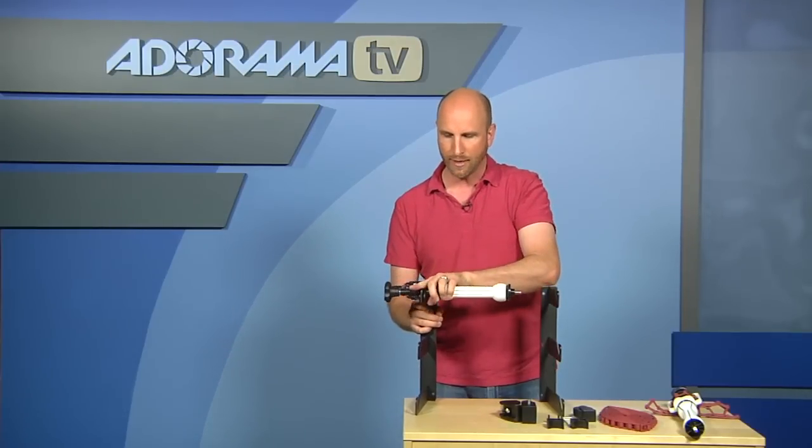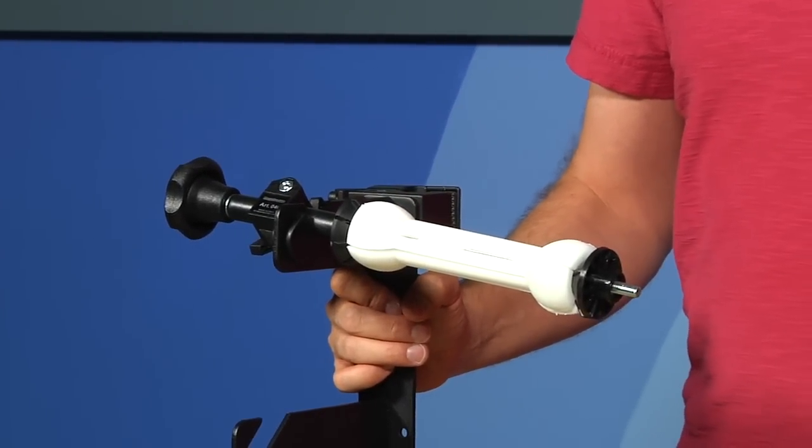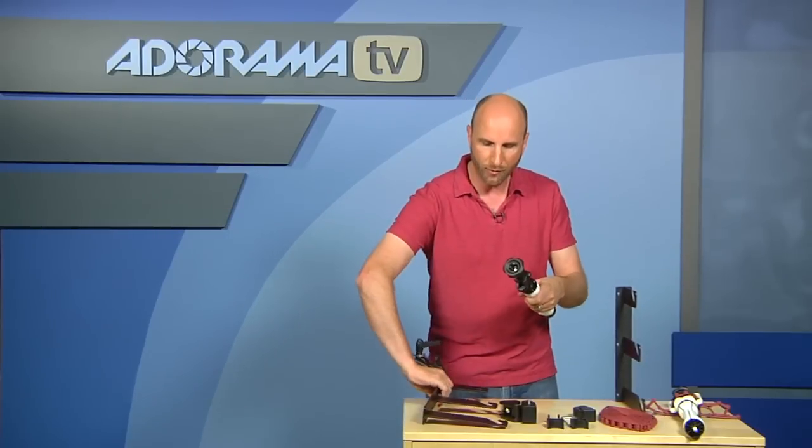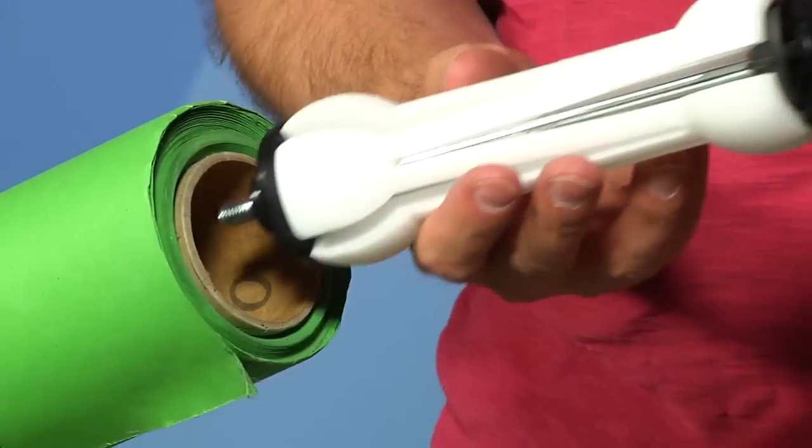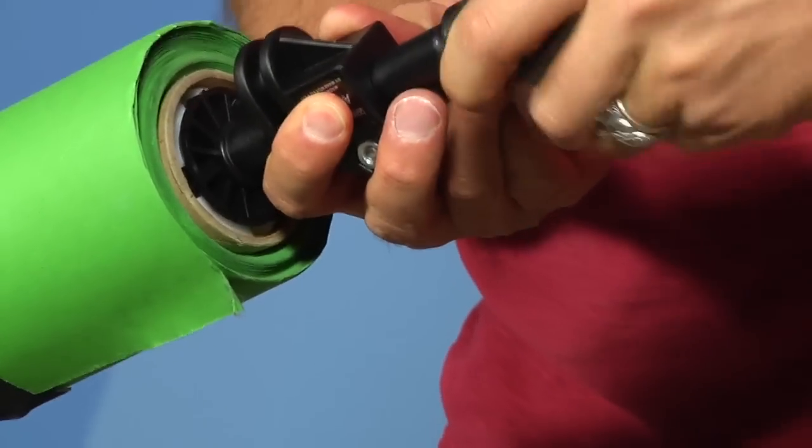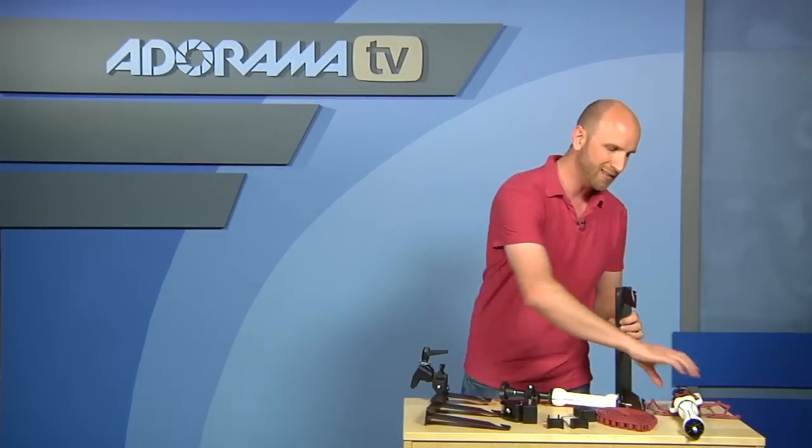And what these do is they slide right on here. There's one on each side. That allows you to put a piece of seamless paper in between these and that holds it up. So let me show you what this does. This slides into the seamless paper and then you twist this knob right here. And that expands and that will hold that paper on there.